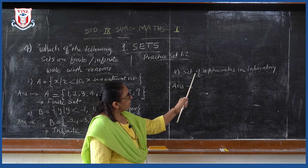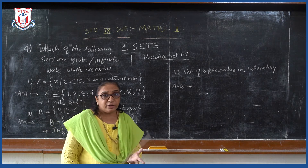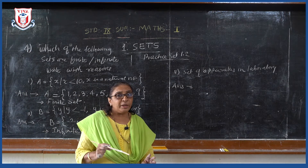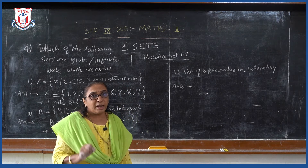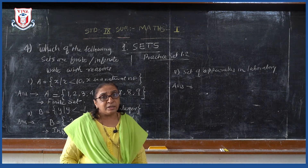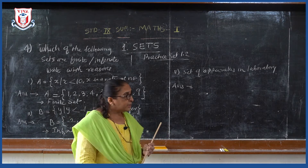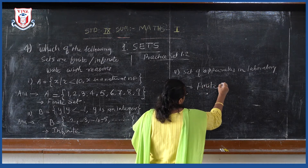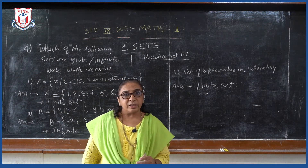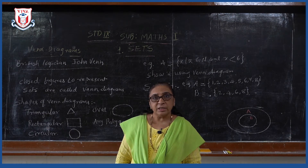One more example: the set of apparatus in a laboratory. If you go to the lab and prepare the list of apparatus, you will find that the list gets over — meaning it is a finite set. So exercise 1.2 is completed and remaining sums you have to solve on your own. The next part of the chapter is Venn diagrams.